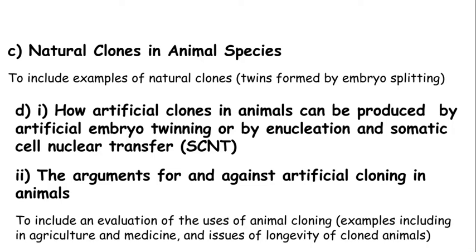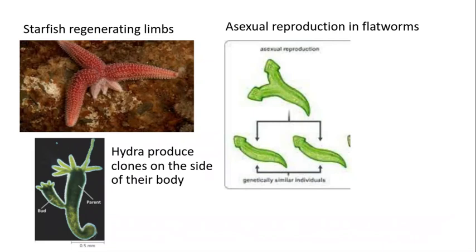Welcome biologists. In this session we're going to look at natural clones and artificial clones. Natural clones can be found in nature such as in starfish regenerating limbs, asexual reproduction of flatworms where they can make an identical copy of themselves, and also in hydra which can produce clones on the side of their body through asexual reproduction. All of this is through mitosis and asexual reproduction.